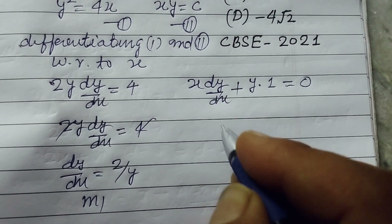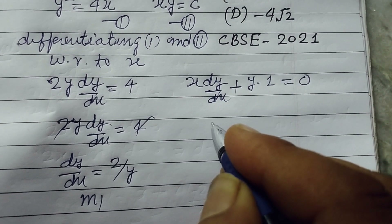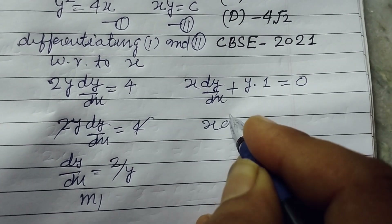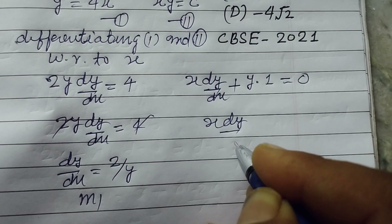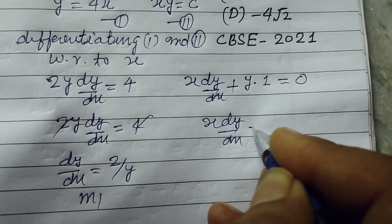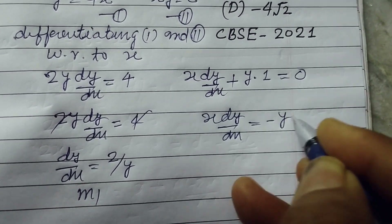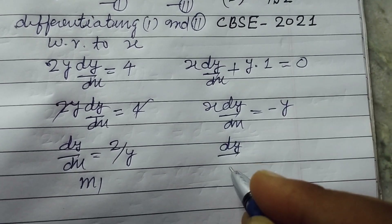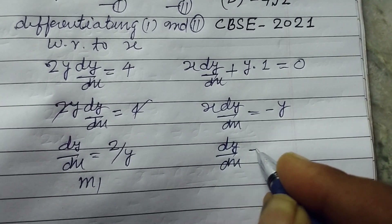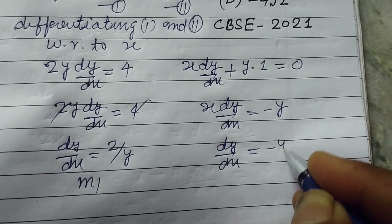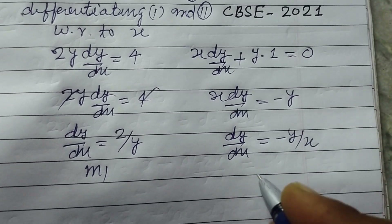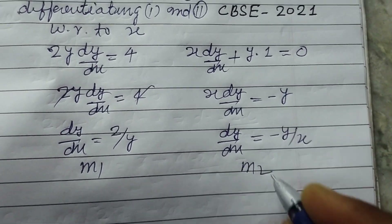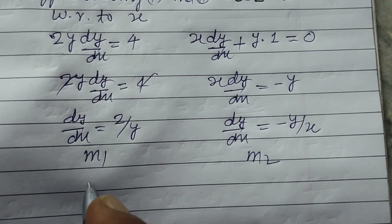Now for the gradient of the second curve: x dy/dx = -y, so dy/dx = -y/x. This is m2.